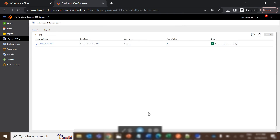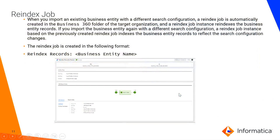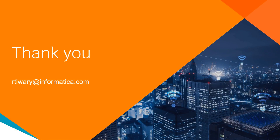That concludes the short demo on how to perform SDLC. One additional point to note: when you import an existing business entity with a different search configuration — for example, if you added a new searchable custom field in your source org and promoted it — a re-index job is automatically created in the B360 folder of the target organization. That re-index job re-indexes the business entity records. If you import the business entity again with a different search configuration, a new re-index job instance will be created reflecting the search configuration changes. Hope you find this video KB useful.